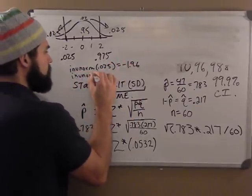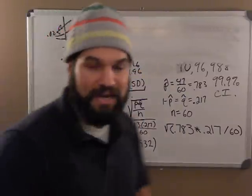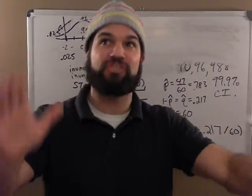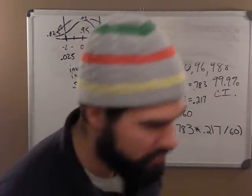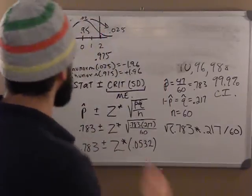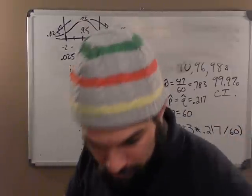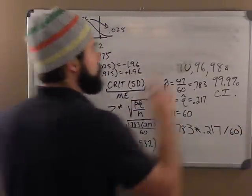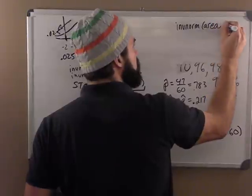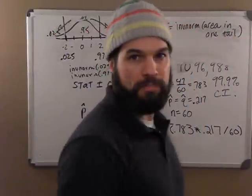So for a 95% confidence interval, you go up and down about 2 standard deviations - exactly 1.96. That's why many books use 1.96 instead of 2. The quick way to do it: inverse norm of the area in one tail will always give you the z-crit. So let's find the critical values for 90%, 96%, and 99.9% confidence intervals.